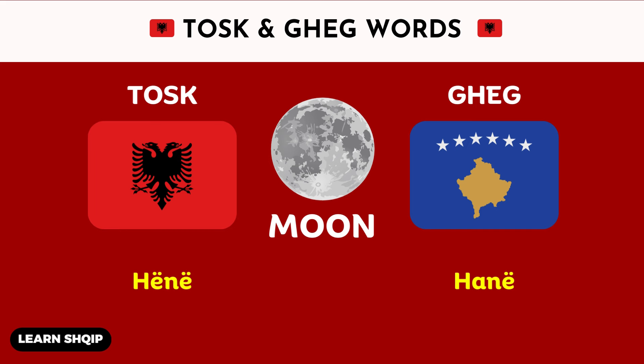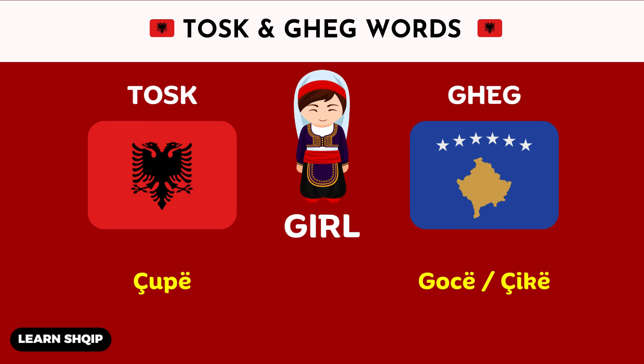Then we have the word girl. For girl, in Tosk, you will say Chup. And then in Geg, you are going to either say Gotts or Chick.